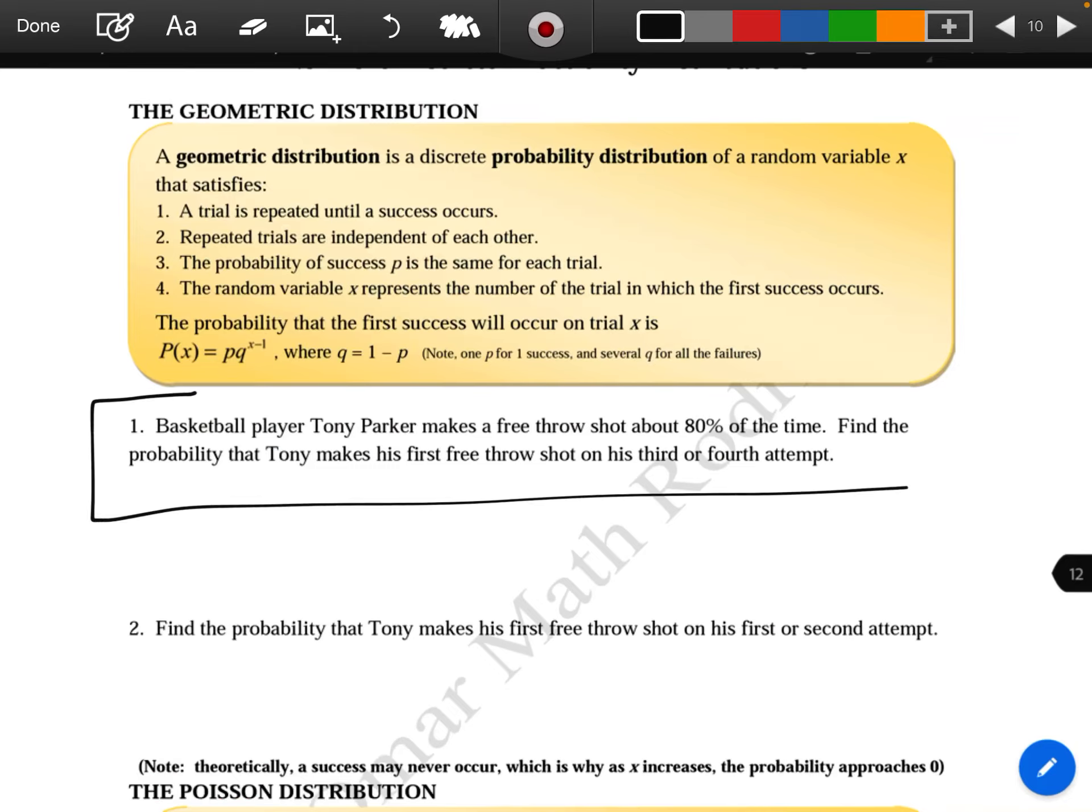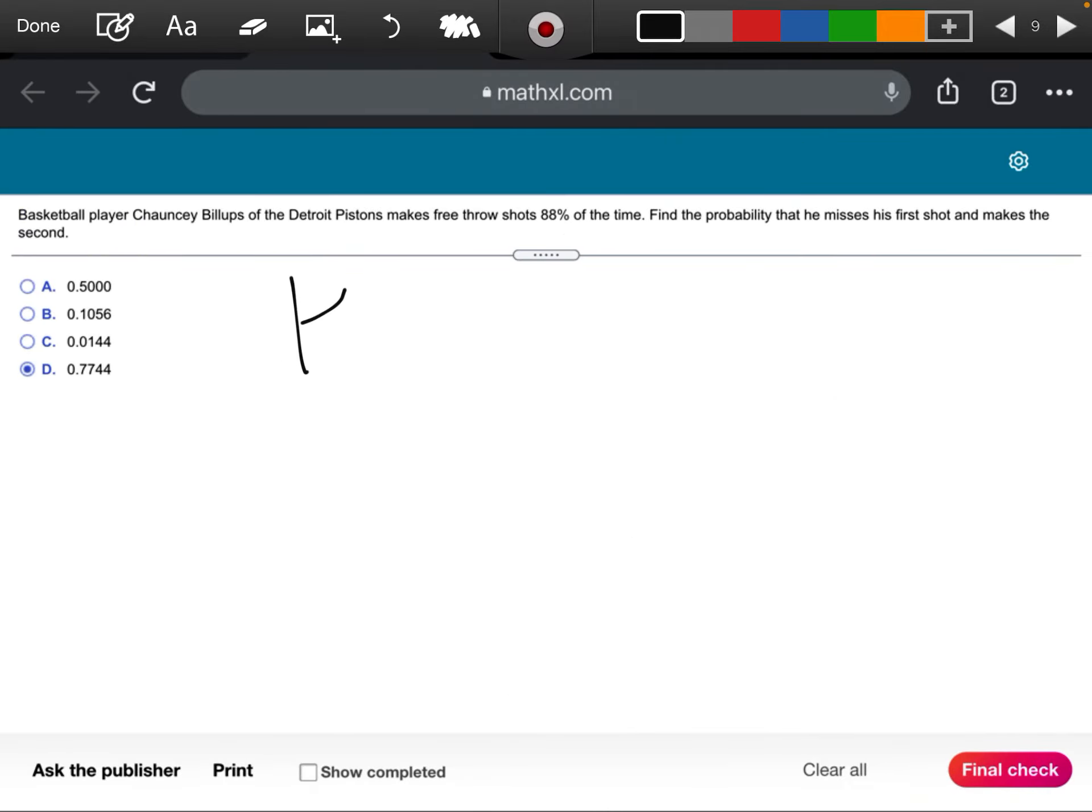I pulled up my notes on geometric distribution. I'm doing this because problem number one looks very similar to the one we have to do. The formula I'm going to use is P(x) equals p times q to the power x minus 1, where q is 1 minus p.